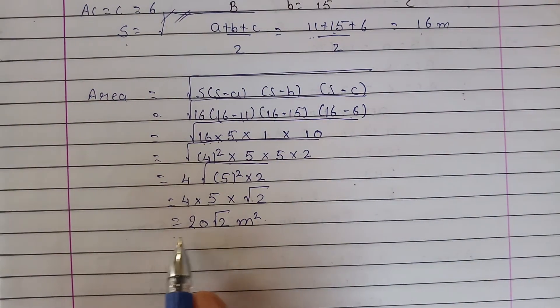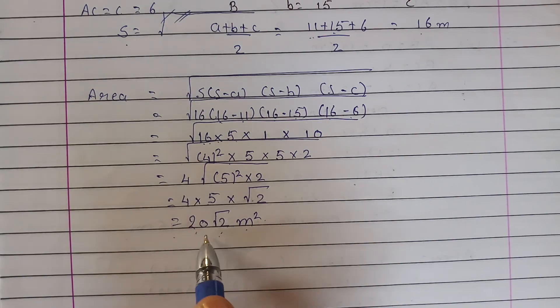So the area of the triangular wall painted is 20√2 square meters. Clear.